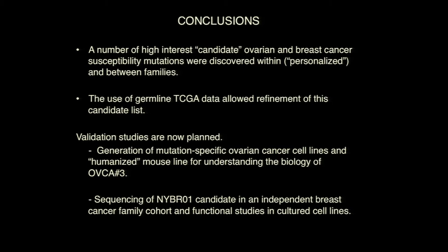In conclusion, we think we've identified a number of high-interest candidate ovarian and breast cancer susceptibility mutations in genes, taken through both a personalized approach within families and between families. The use of germline TCGA data allowed refinement of the candidate list, and the next step is validation. The functional studies are going to take a lot of time — generating mice, animal models, and introducing these mutations in cell lines to understand the actual impact on the biology. If anyone is interested in looking through more breast or ovarian families or has additional data to share, we're more than willing to collaborate to trim down the candidate list.